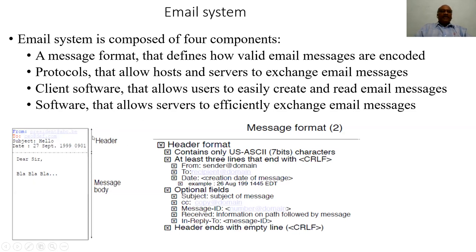An email basically contains two important parts: the header and the message body. In the early days of email, ASCII characters were used along with control characters — the carriage return and line feed — which control the flow of characters and act as entity limiters to properly structure the email. The header contains important attributes: where the email originated and where it is to be sent.